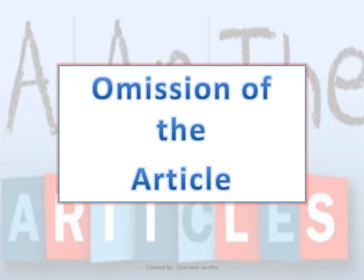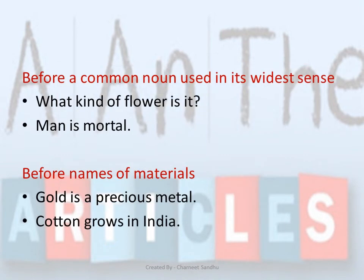Now, even though we know where to use each of these articles, we must also know where we shouldn't use them. We do not use an article before a common noun used in its widest sense — for example: 'What kind of flower is it?' We also don't use an article before names of materials — for example: 'Gold is a precious metal.'